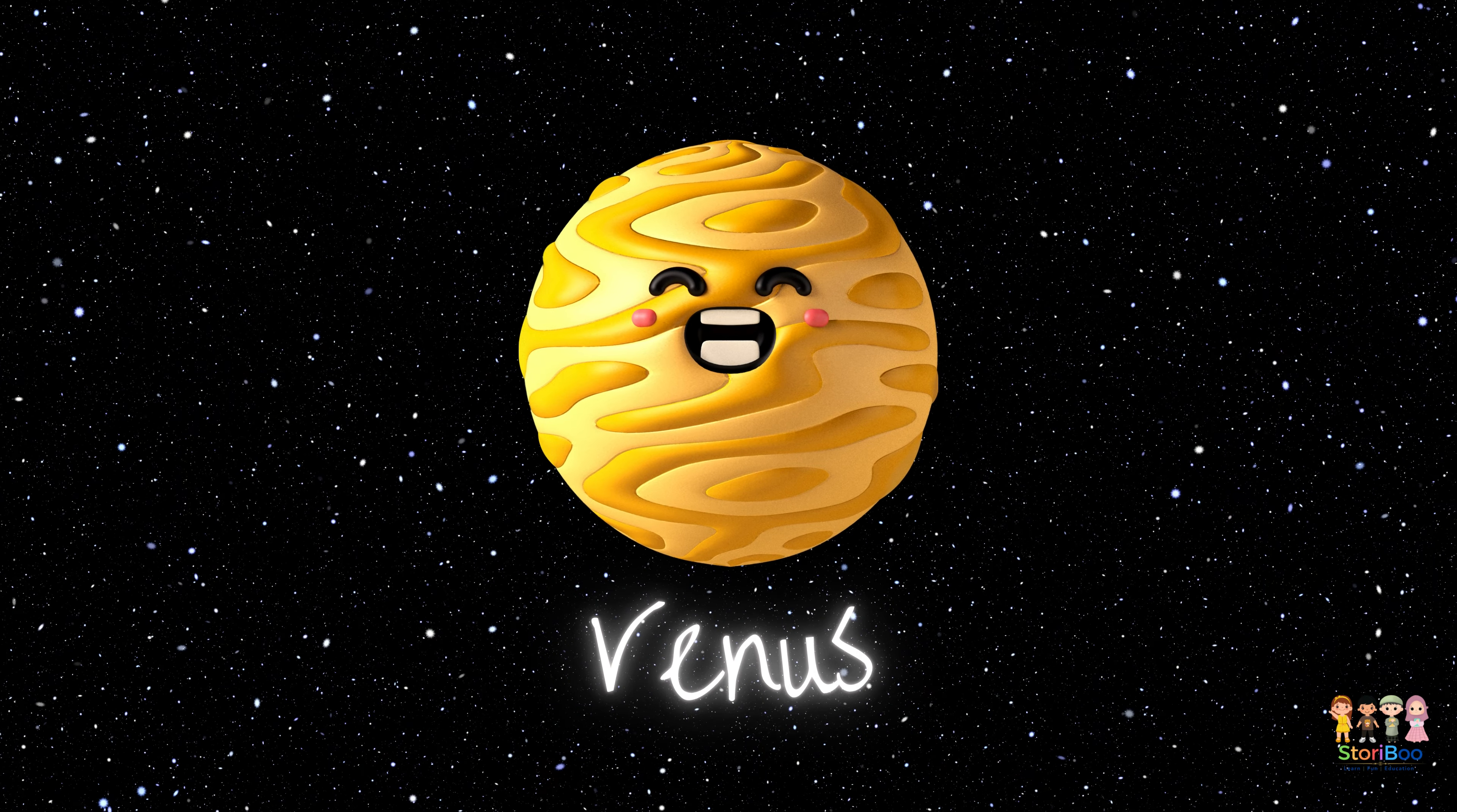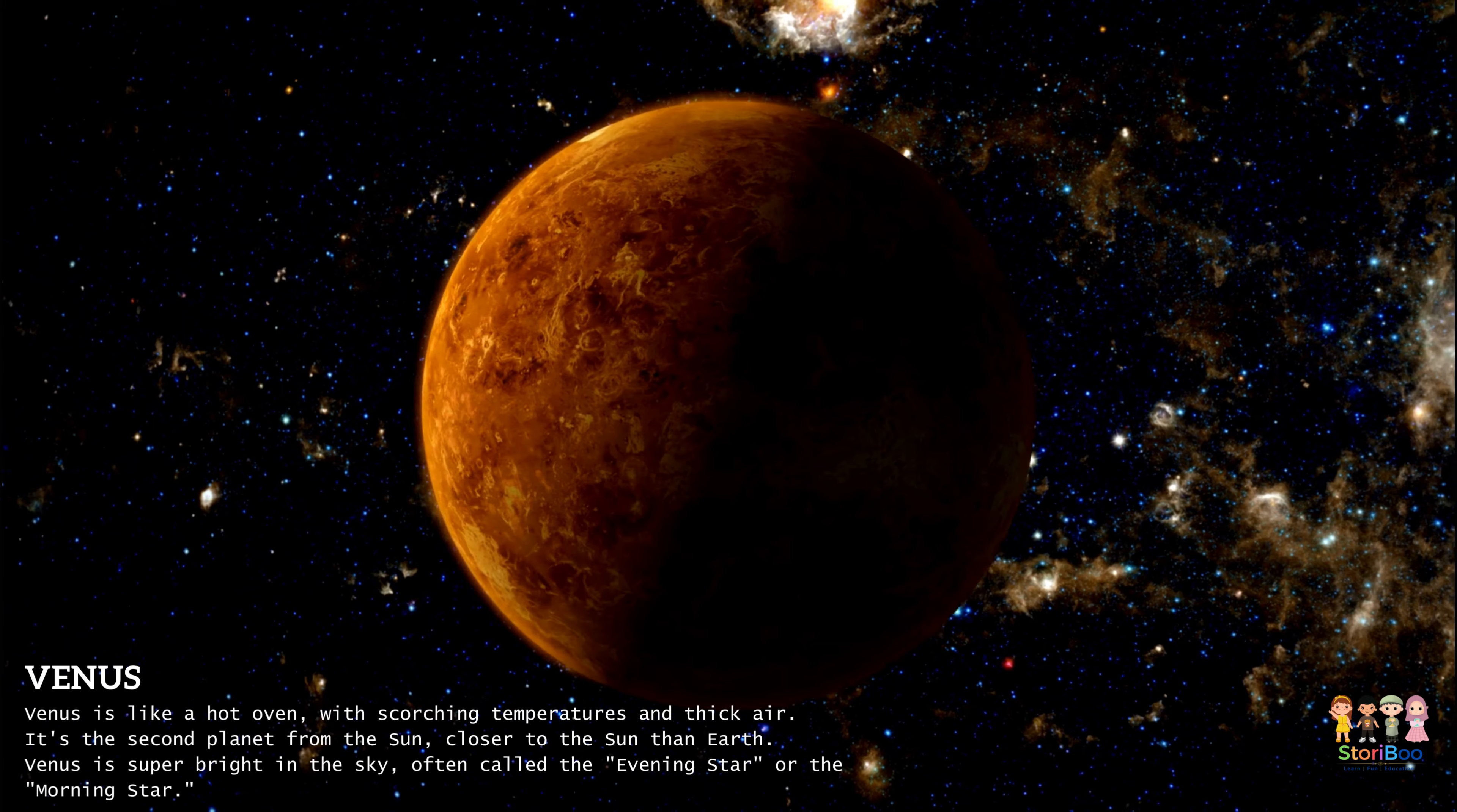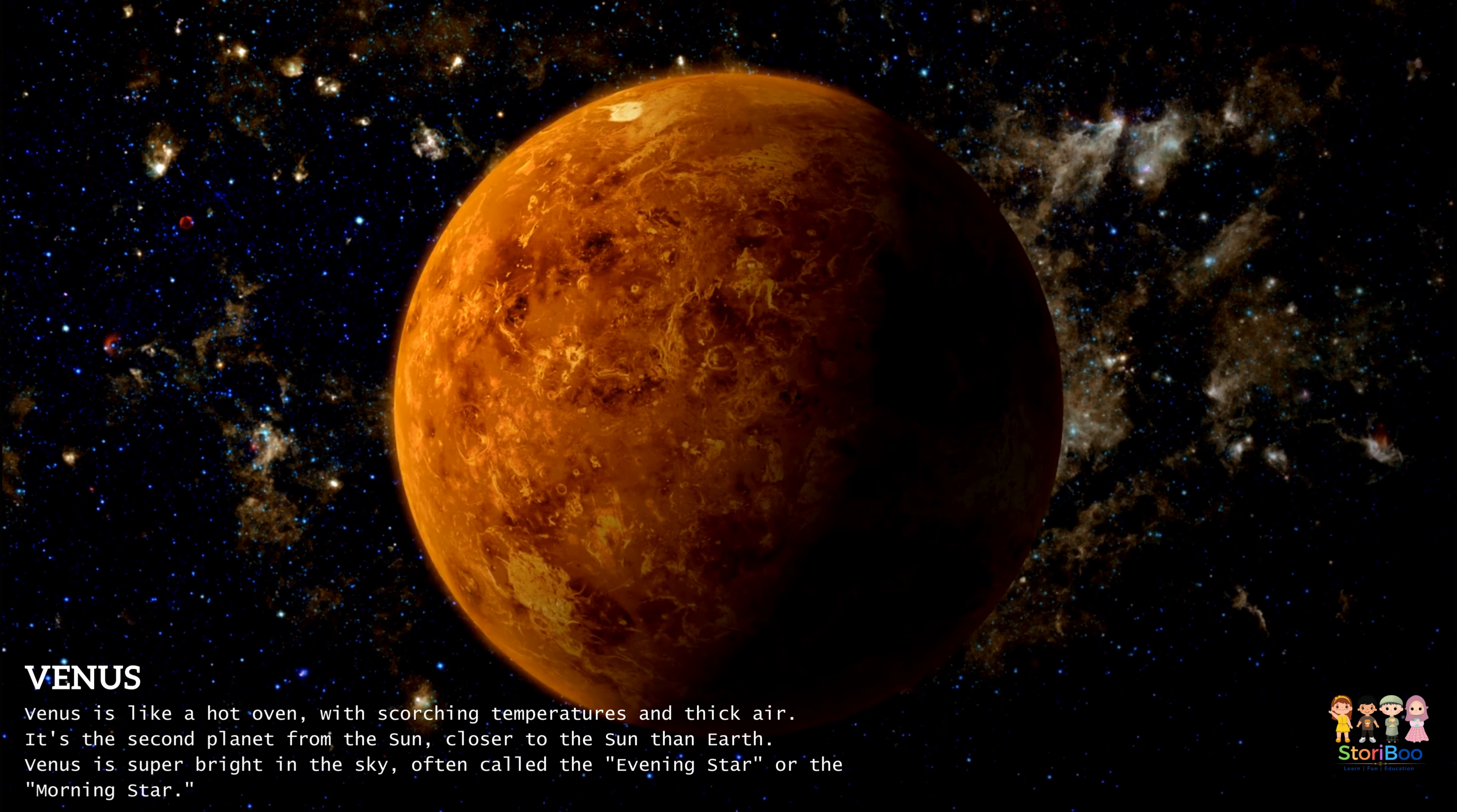Venus is like a hot oven with scorching temperatures and thick air. It's the second planet from the sun, closer to the sun than Earth. Venus is super bright in the sky, often called the evening star or the morning star.